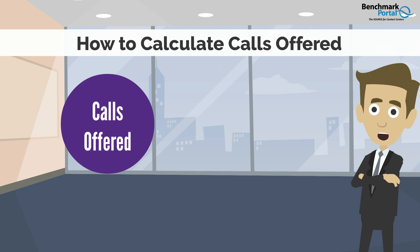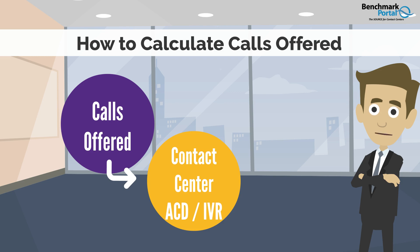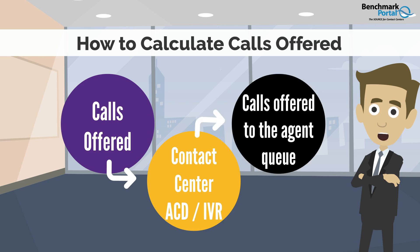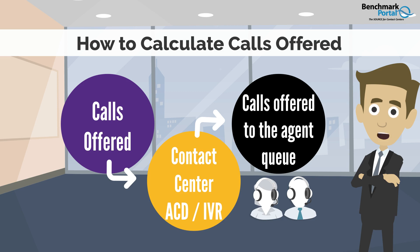We start with calls offered. This is the total number of calls of all types which are directed to a contact center by callers. Calls offered should not be mistaken with calls offered to the agent queue, a metric which takes only the volume of calls which go through the IVR and are then offered to — that is, routed to — the agent queue.